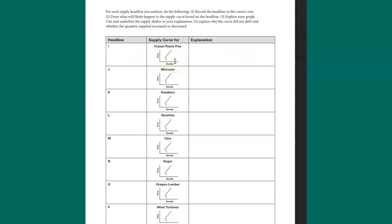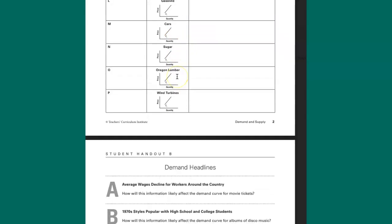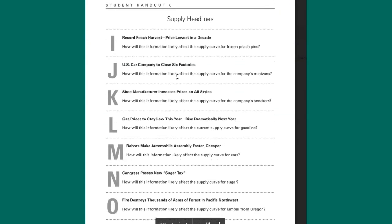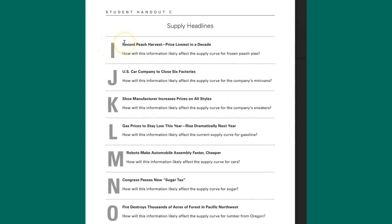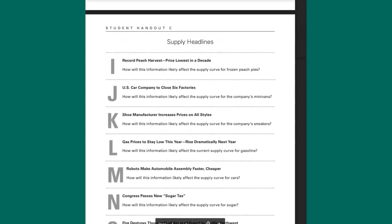Frozen peach pies. So I'm going to go down here to the headline for supply and match it up with letter I, which is that item. Record peach harvest, the lowest price in a decade. Here we go. Let's move me down this way. And then how will this information likely affect the supply curve for frozen peach pies?